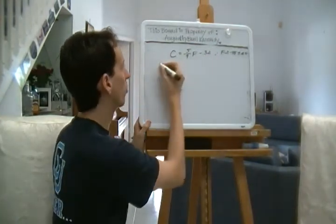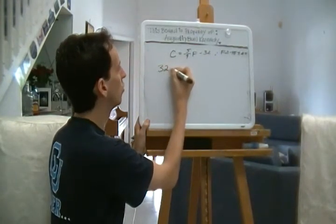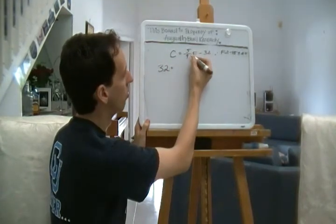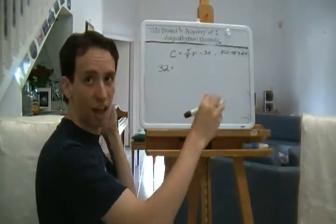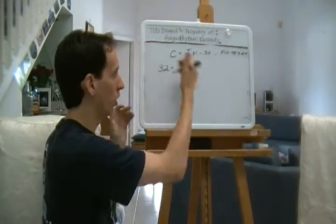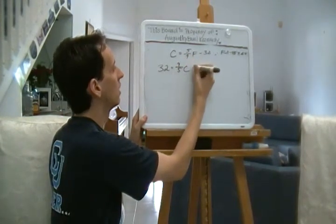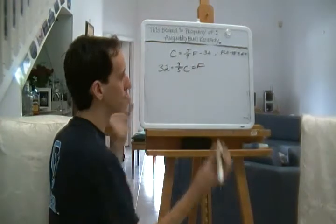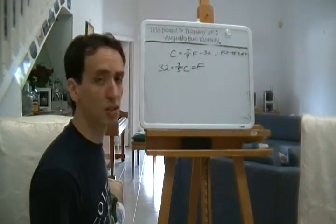So what we're going to do, we're going to add 32. So 32 plus, let's get rid of the 5 ninths by taking the reciprocal, moving it over, 9 fifths C equals F. It's as simple as that.